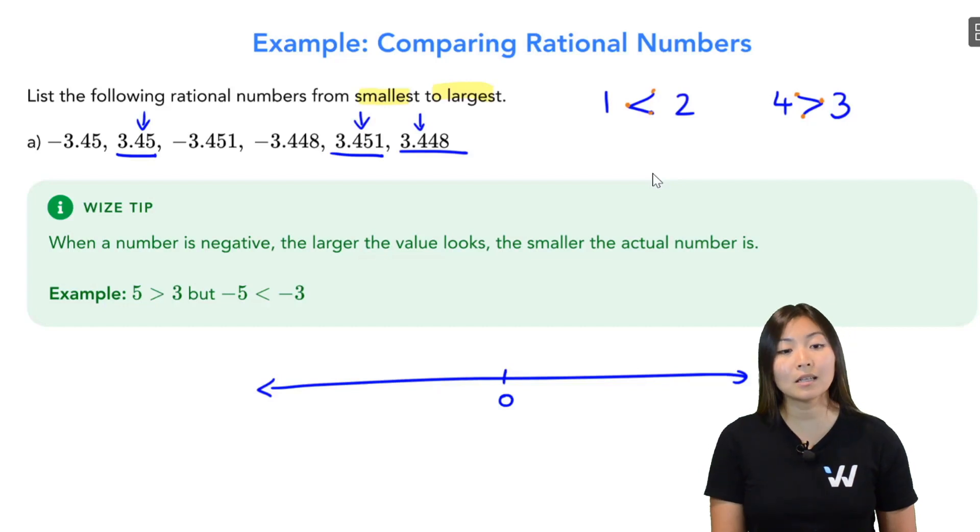Now we go on to the next decimal. The next decimal here is a five, a five, and a four. So right off the bat, we see that the four is the smallest. So on the positive end, I have 3.448 being the next smallest number after zero.